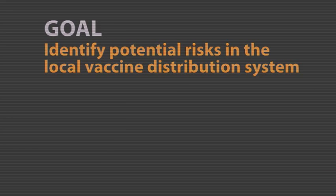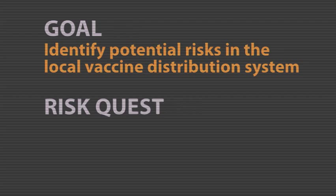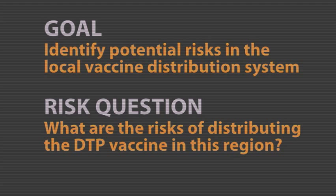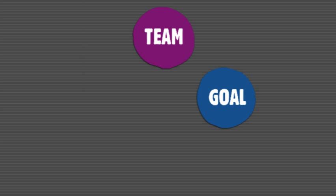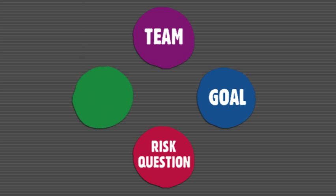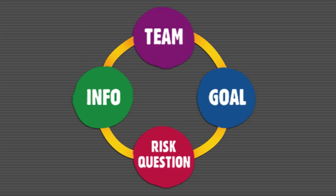For example, a goal could be to identify potential risks in a local vaccine distribution system. With the goal, you then have the risk question — really what you are going to be focusing on as you do that risk assessment. For example, what are the risks of distributing the DTP vaccine in this particular region? Before you start the risk assessment, you need a team of knowledgeable people from different disciplines, a goal, the specific risk question that will be answered, and information about the process, material, or device.